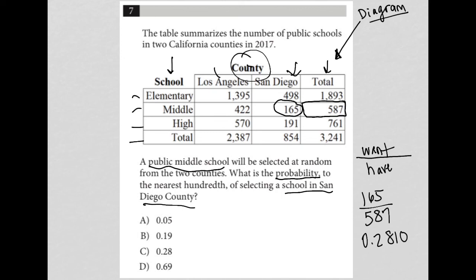I want to round to the nearest hundredth, so that's going to be 0.28 — the one and zero can go away. Therefore, the correct answer is choice C.